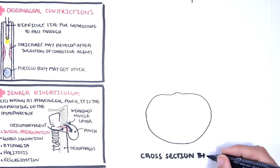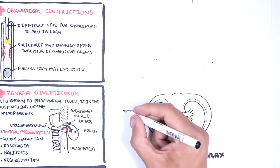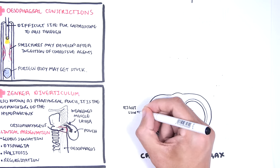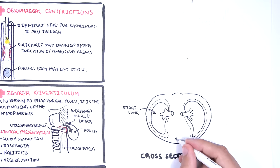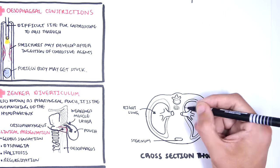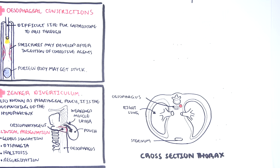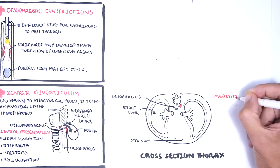Imagine cutting a cross-section now of the thorax. Imagine this is a CT scan. Here we have the right lung, the sternum. Here is the esophagus at the back. This is where we introduce the mediastinum.